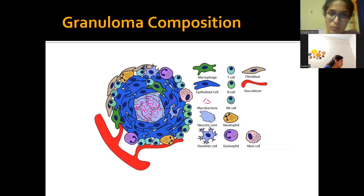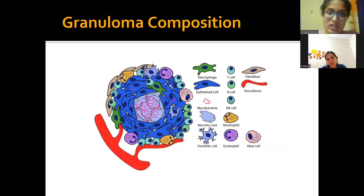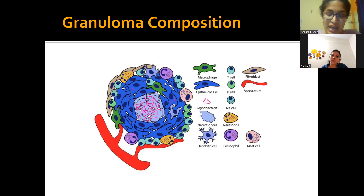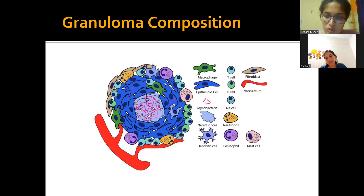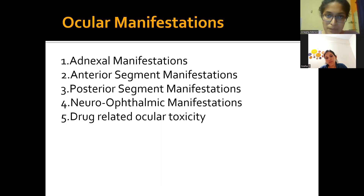A granuloma is composed of epithelioid cells associated with macrophages and fibroblasts that form an outer fibrous core, entrapping foreign bacilli to prevent further spread. They kill them in the center, forming a caseating necrotic core. This is the key finding in histopathology examinations, and the caseating granuloma can be seen wherever tuberculosis affects the body. The histopathological image shows how the eosinophilic stain is taken up prominently by the necrotic core in the center.